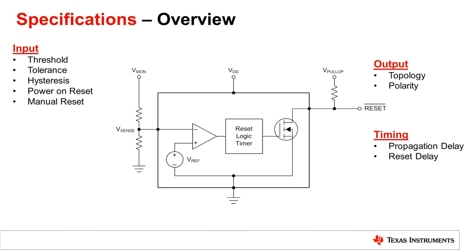Specifications for a voltage supervisor can be divided up into three main categories: input, output, and timing features. For this video, we will go into details on the output which include topology and polarity. We will also go into detail on timing which include propagation and reset delay.